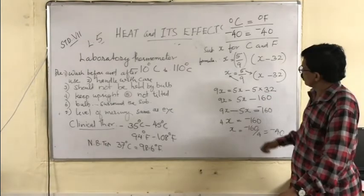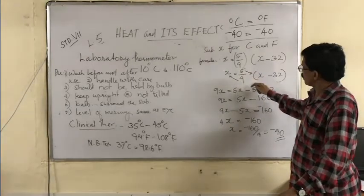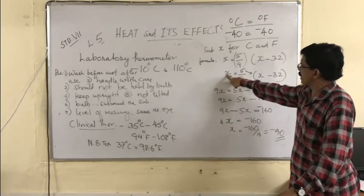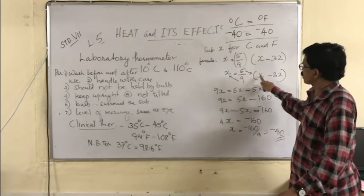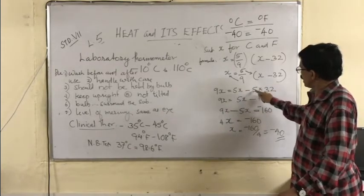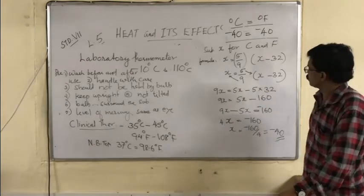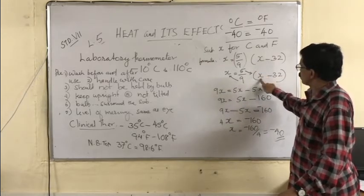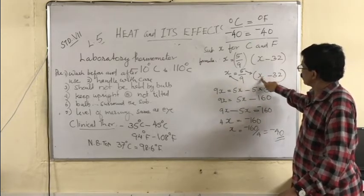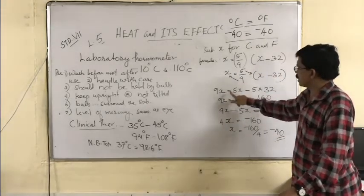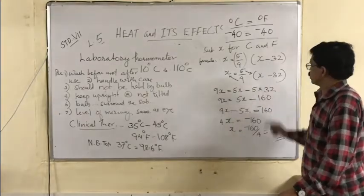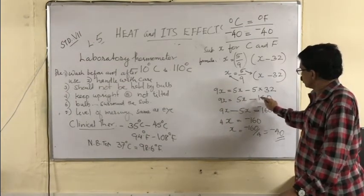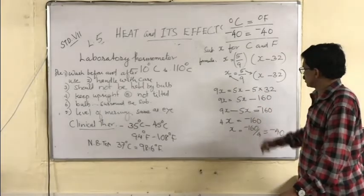In the next step we will write X is equal to 5 by 9, X minus 32. Now 9 multiplied with X, so 9X. 5 will be multiplied with X and 32, so 5X minus 5 into 32. 9X is equal to 5X minus 160, because 5 into 32 is equal to 160.